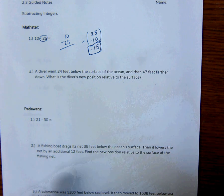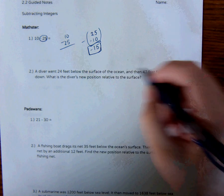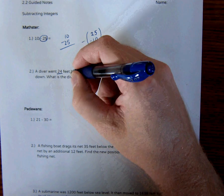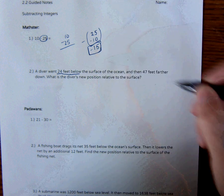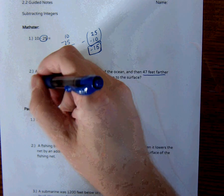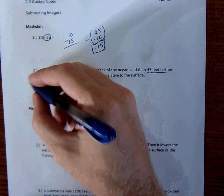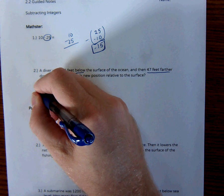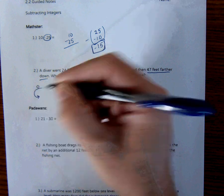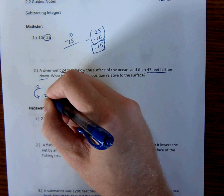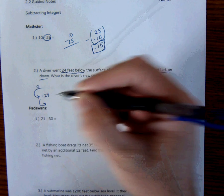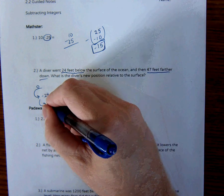So if a diver went 24 feet below the surface of the ocean, and then 47 feet further down, what is the diver's position relative to the surface? So if we think of the surface as zero, this diver goes down 24 feet, and then she goes down again 47 feet.